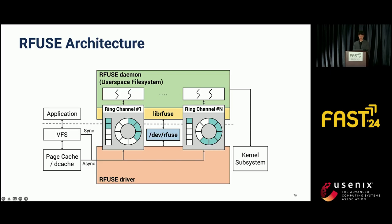This is the overall architecture of RFuse. Similar to FUSE, RFuse consists of two main components: the RFuse kernel driver and the user space RFuse daemon. However, unlike FUSE, which relies on a single queue for communication, RFuse employs a ring channel-based message passing mechanism for each core. This design aims to improve throughput by parallelizing the processing of file system operation requests.